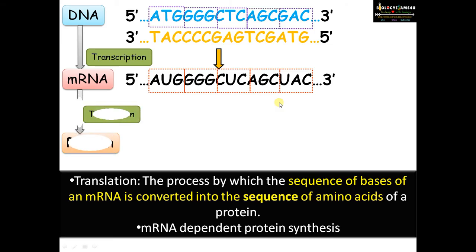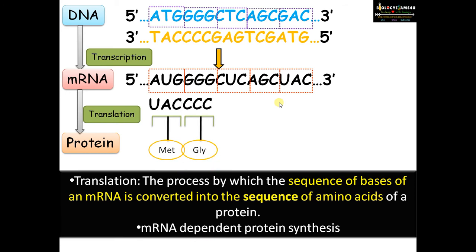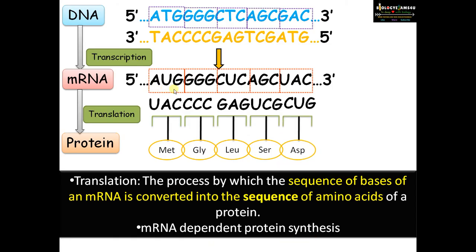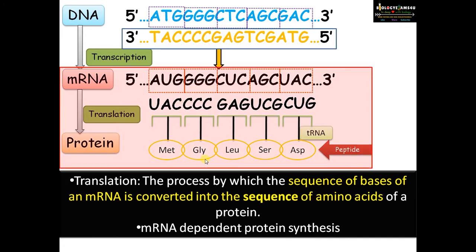The next process: the information on mRNA is used to synthesize amino acids of a protein. For example, AUG is a triplet codon that codes for amino acid methionine. In simple terms, translation is a process by which the sequence of bases of mRNA is converted to a sequence of amino acids of a protein — AUG codes for methionine, GGG codes for glycine, etc. So it is simply an mRNA-dependent synthesis of protein.